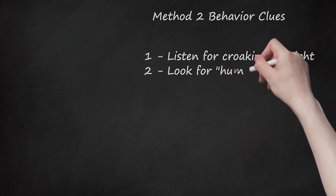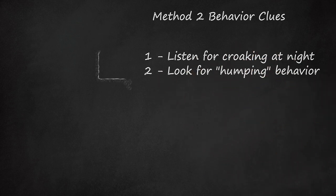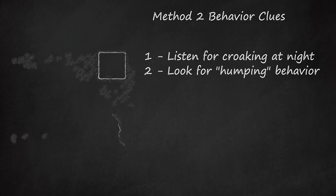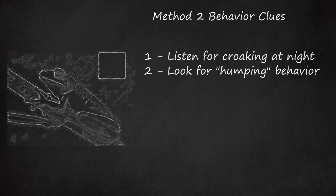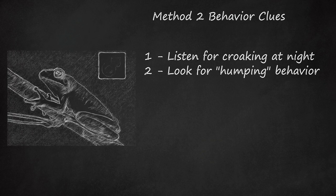Second, look for humping behavior. There's no nice way to say this, male frogs will occasionally hump things. In other words, they will climb onto something, grasp it with their forelegs, and press the underside of their bodies against it tight. They often won't use an obvious thrusting motion like a male dog, but their intention should be obvious.